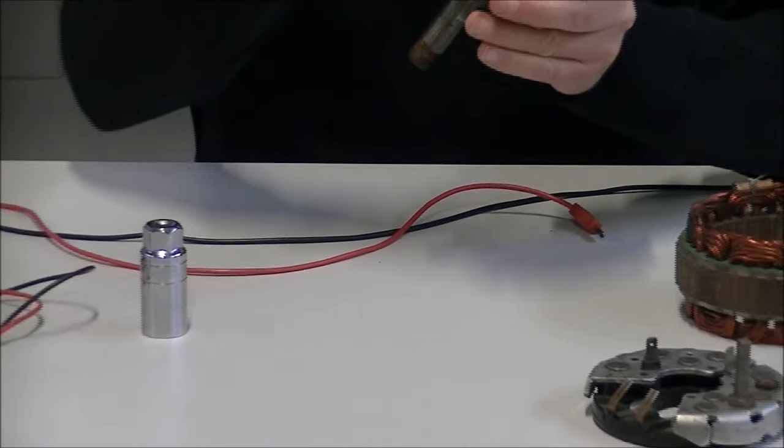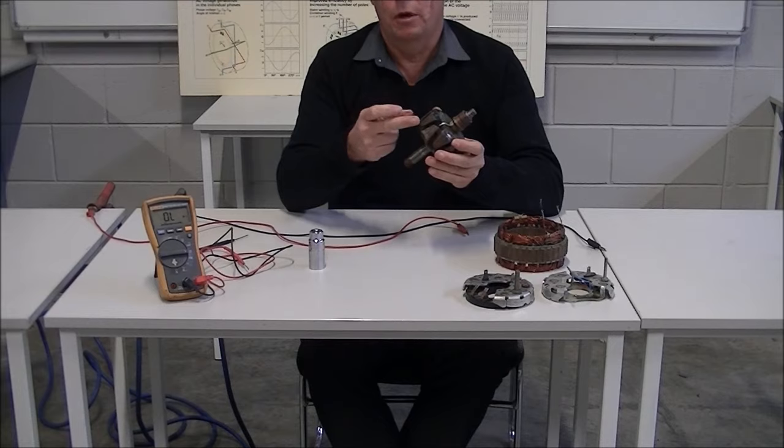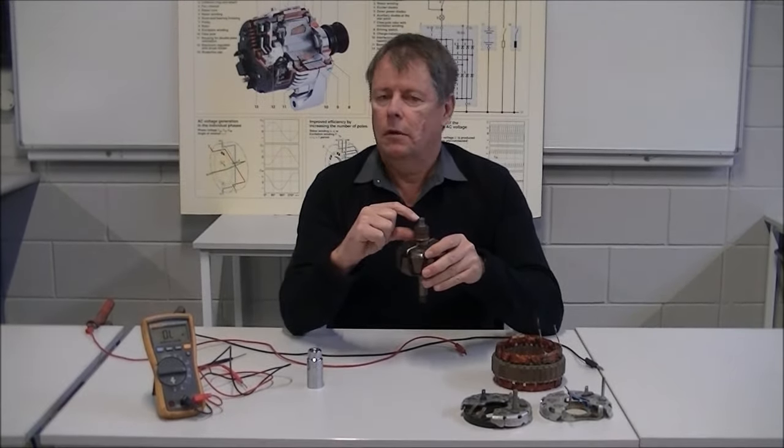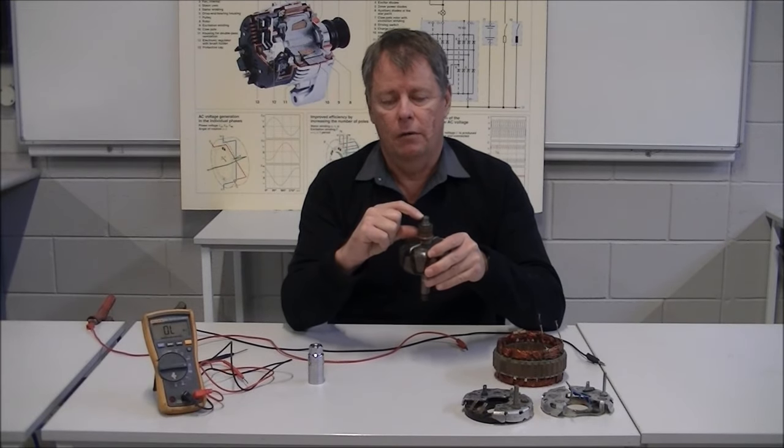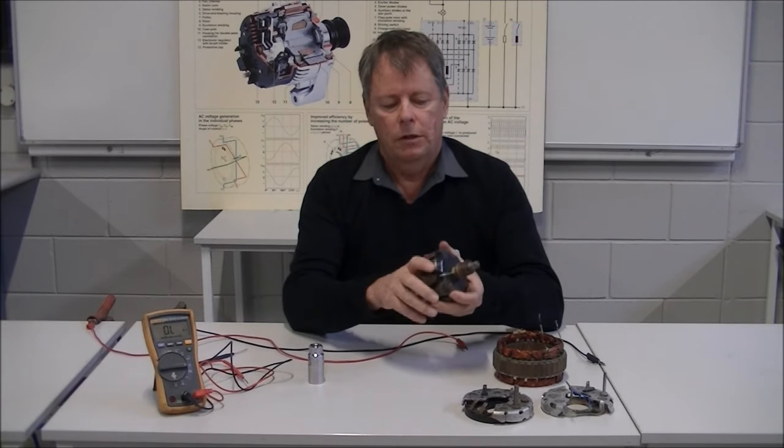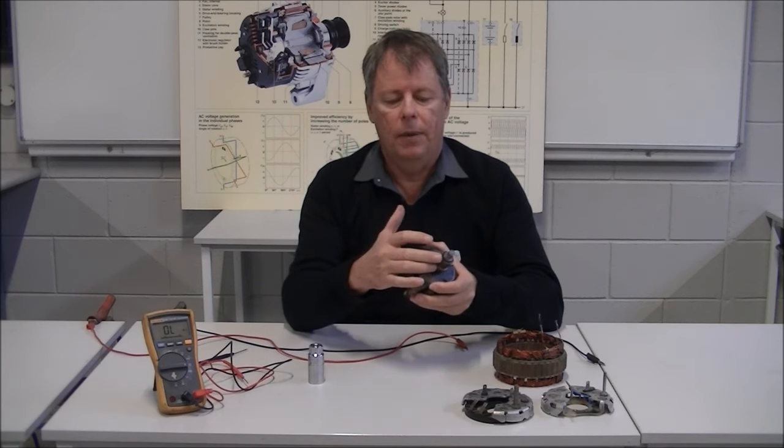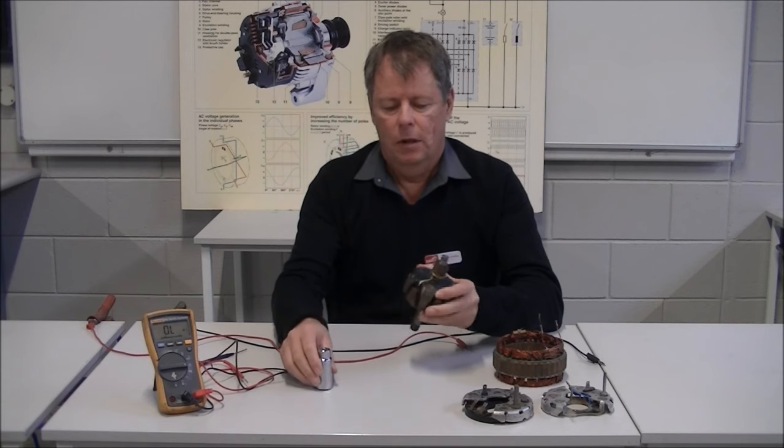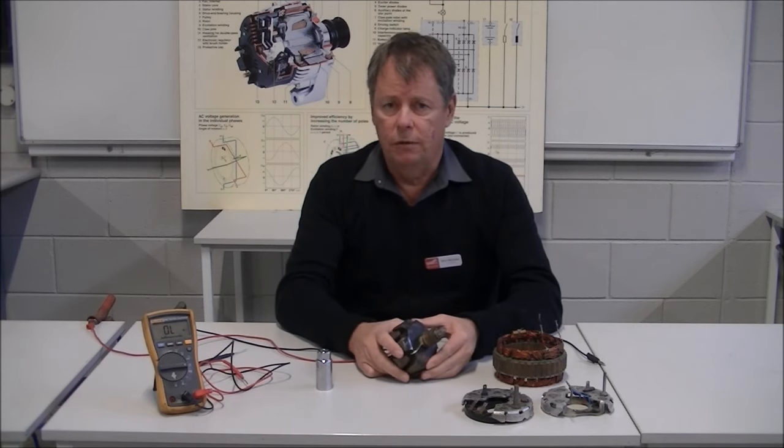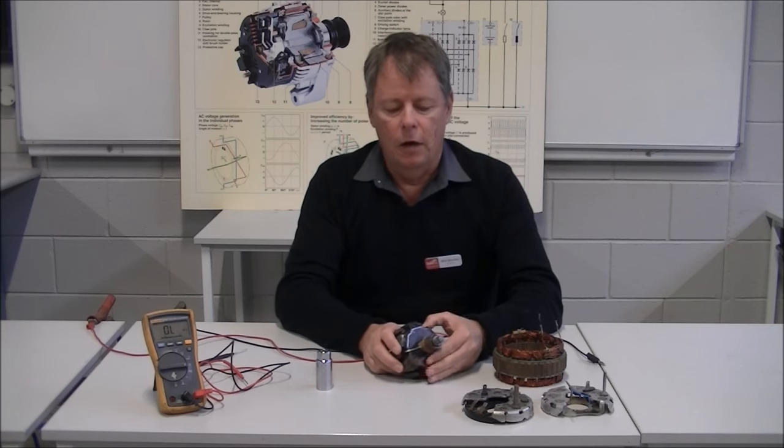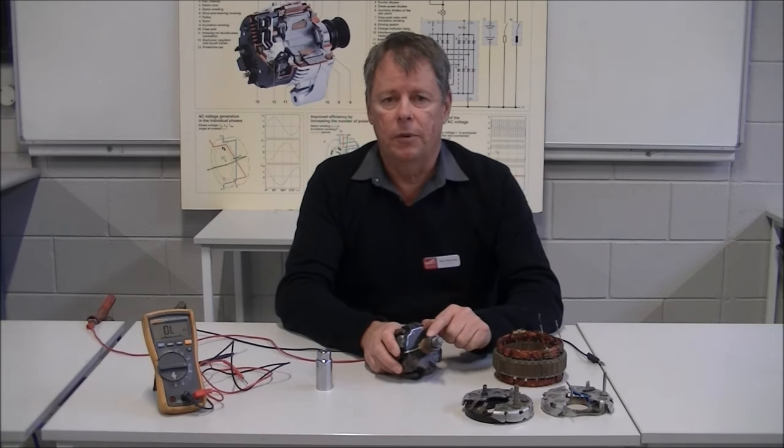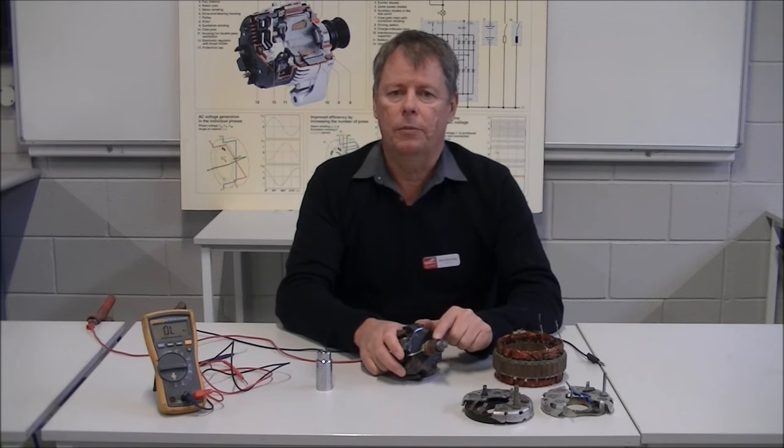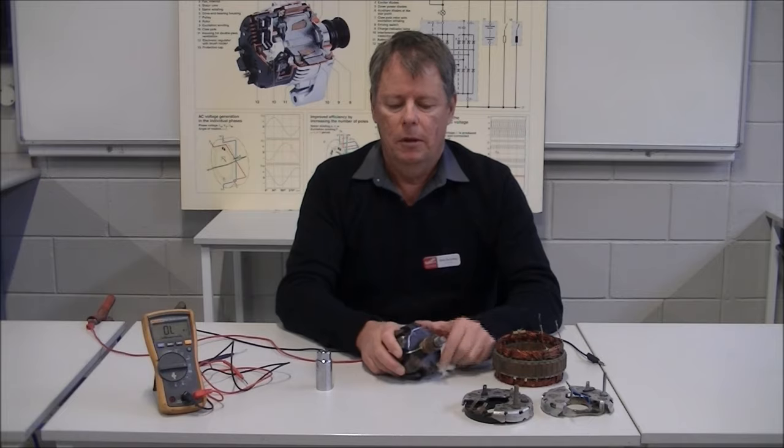So we've checked for continuity, for short by knowing what the specification is. We checked for connection to earth, our ground, and that all checked good. Just for interest's sake, we connected up power to it and energized it, and showed that it turns into a magnet. So this rotor electrically is good for service. The only thing I would add is this one is showing quite a bit of wear on the slip ring, so if I did put this one back into service, I would probably replace the slip ring before I did that.